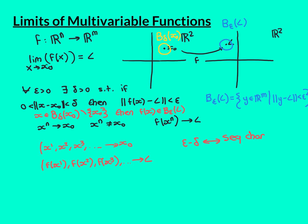Writing the epsilon-delta definition in terms of the ball notation: for all epsilon greater than zero, there exists a delta greater than zero such that if x is an element of the deleted delta ball around x0 — that is, the delta ball around x0 excluding x0 itself — then f(x) is in the epsilon ball around L. That is an equivalent way of writing the epsilon-delta definition using ball notation.